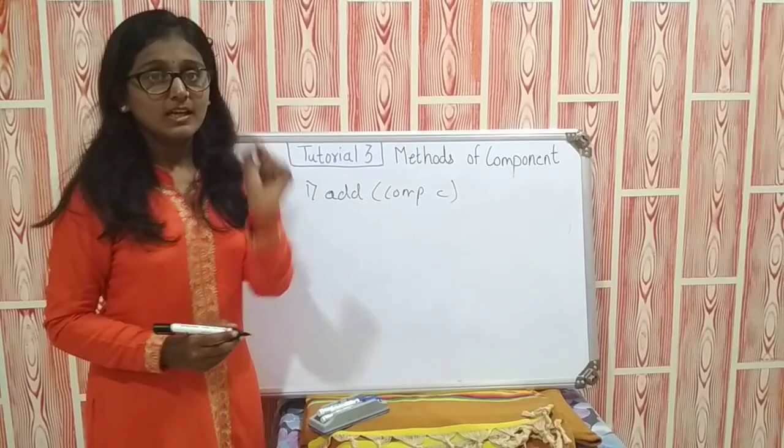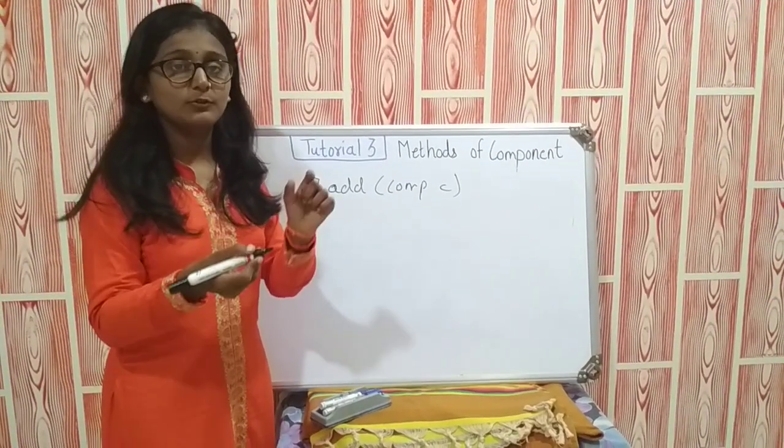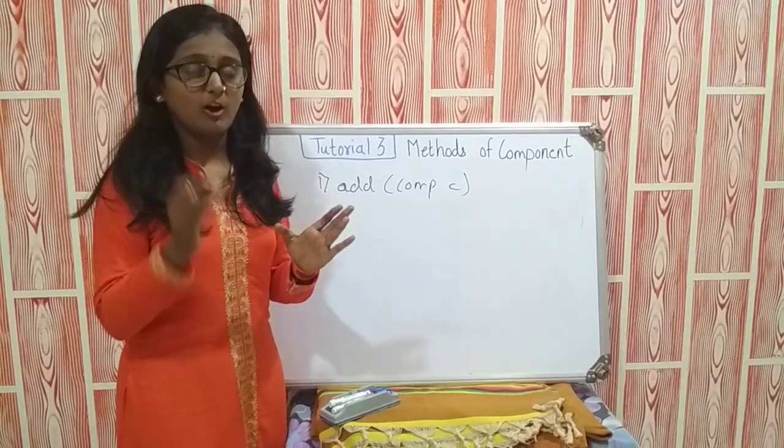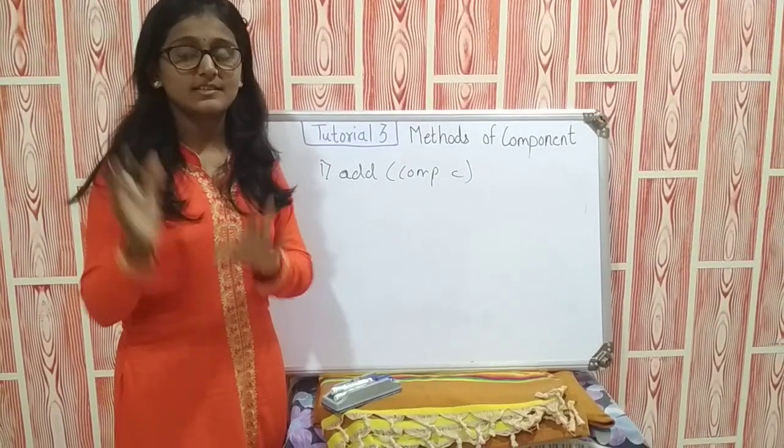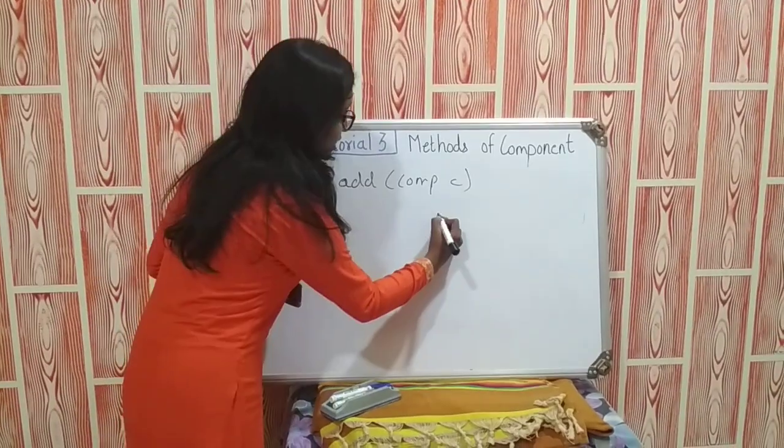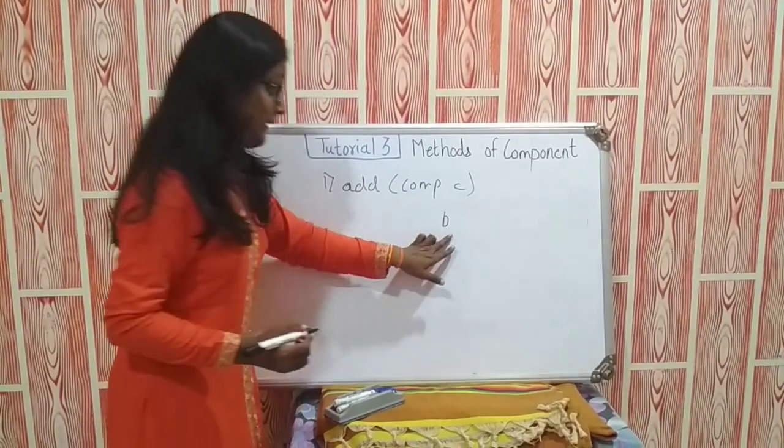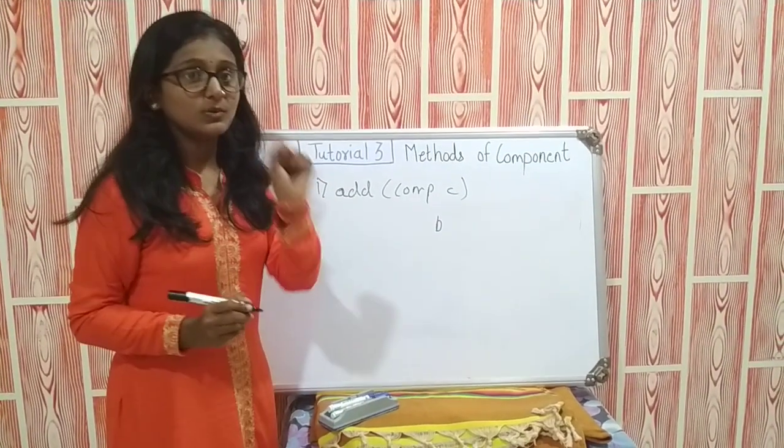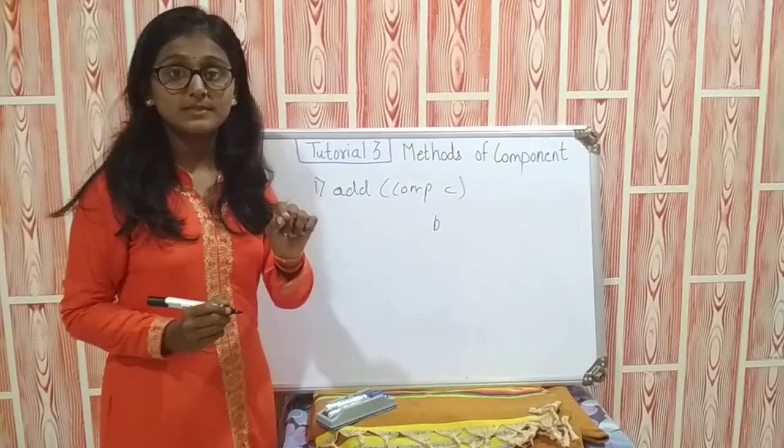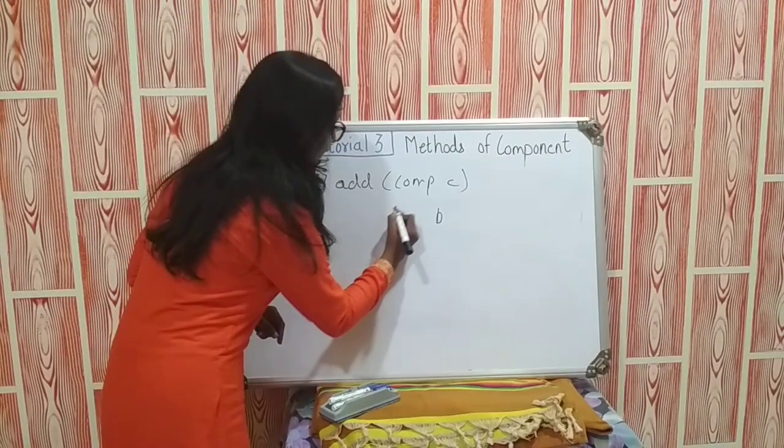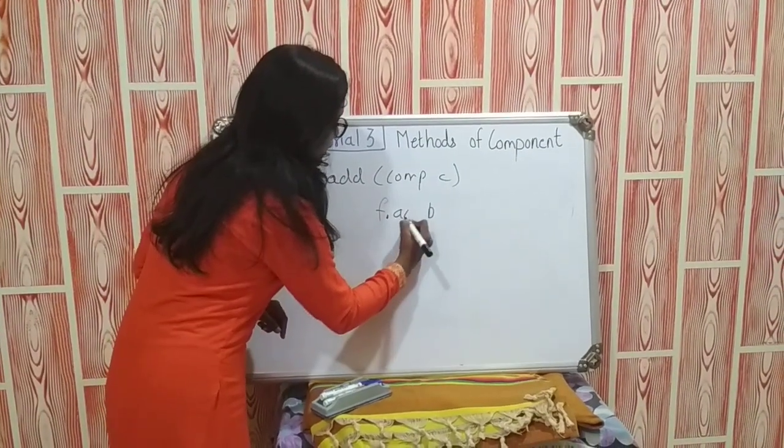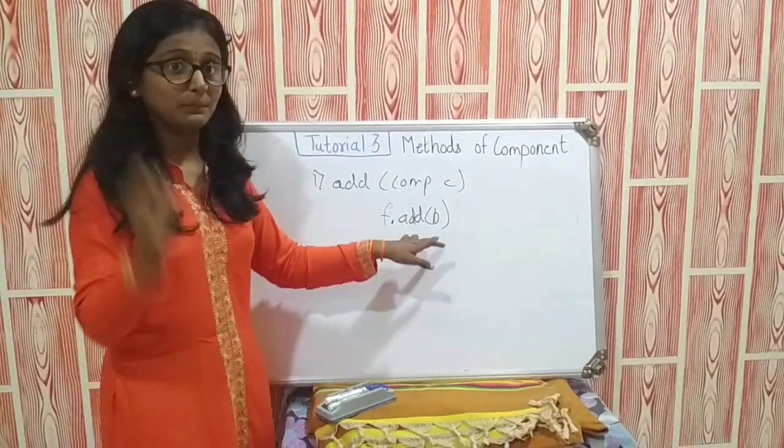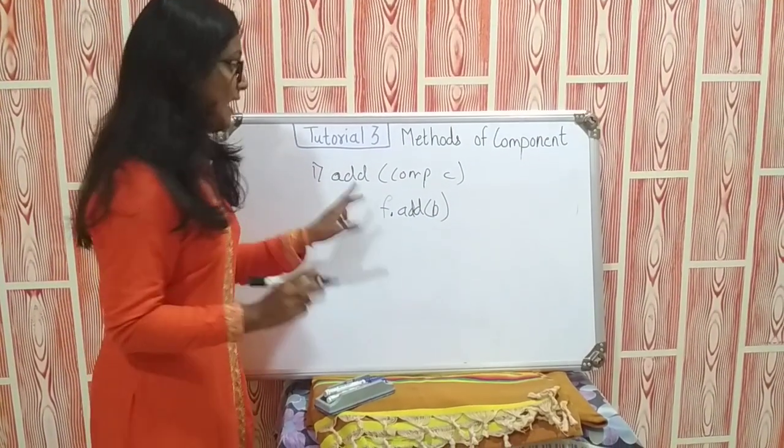Now, how to use it? Suppose I have taken the method, as we know button is a predefined class. Then object name is equal to new and its constructor. Here I have taken the button B as an object of a button, and F is the object of a frame class. F dot add B, that means I am going to add the button on a frame. In this way we will use this add method.